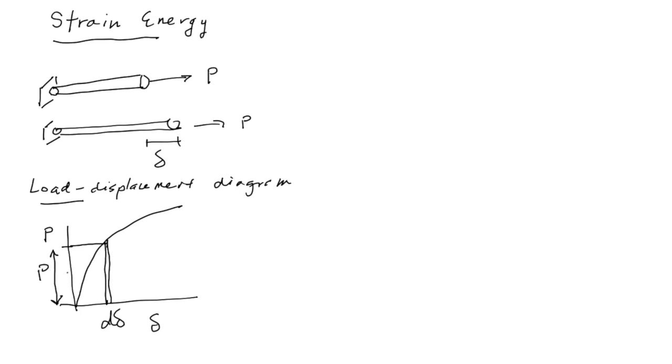Now for a constant P, so the load is constant, the work done by the load P is just P times Delta. That shouldn't be a surprise, right? Force times distance equals work. So if the load P is constant, then the work done by the load on the bar is simply P times Delta.